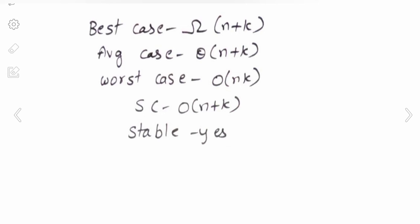The time complexity of Radix Sort: best case is Ω(n + k), average case is Θ(n + k), and worst case is O(n + k). Space complexity is O(n + k). It is a stable algorithm, and while designing this algorithm we should choose appropriate data structures.